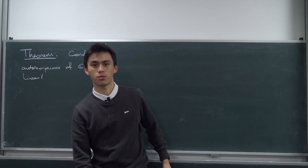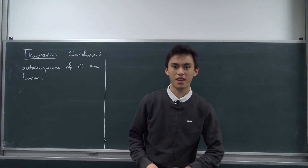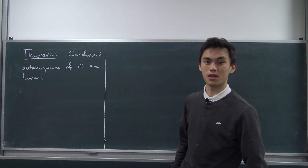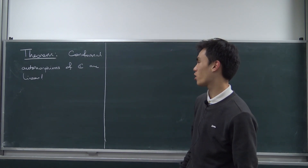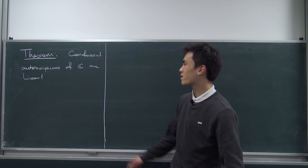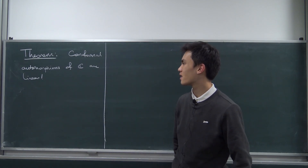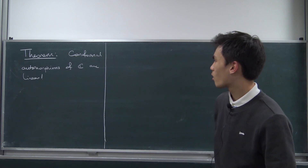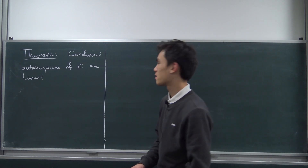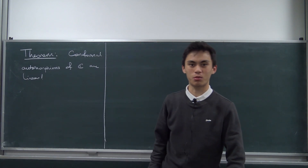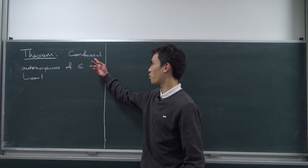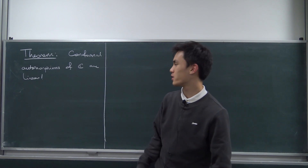Greetings everybody and welcome back to another video. This is like my third time filming this video because every time I've filmed it I keep getting audio problems, which is really annoying. But what are we taking a look at today? We're taking a look at this nice little theorem: it says that conformal automorphisms of ℂ are linear. There are a bunch of words in here which we may not know what they mean exactly yet — for example, what is conformal and what is automorphism?